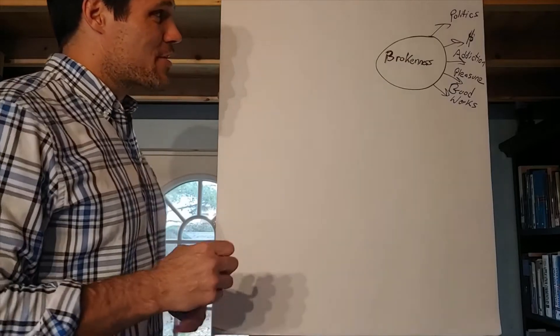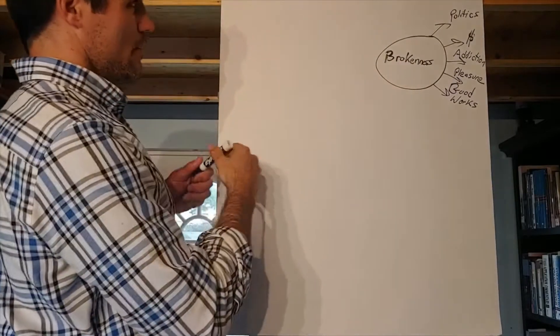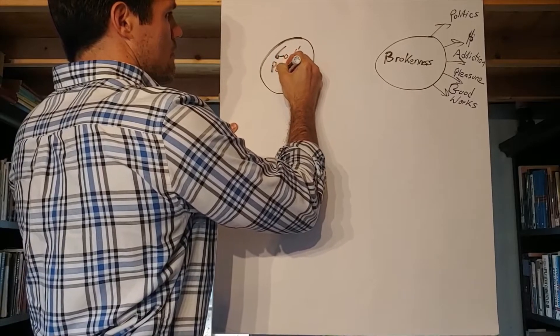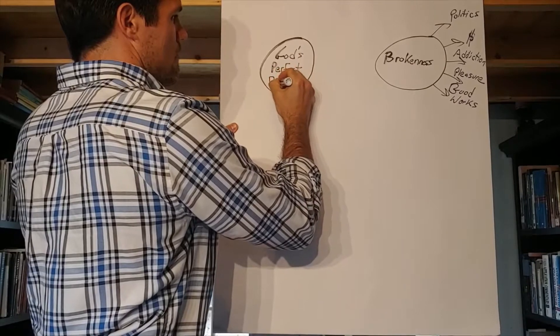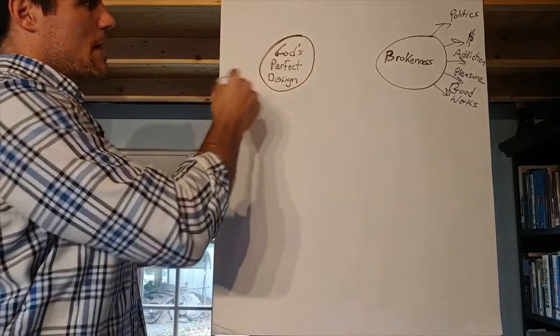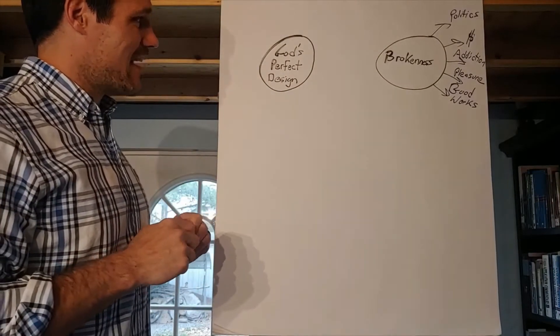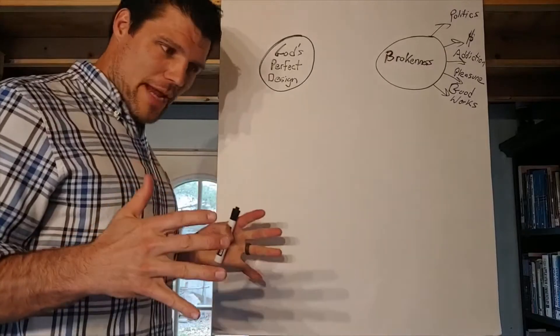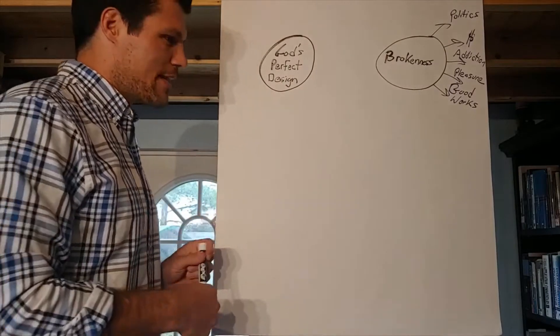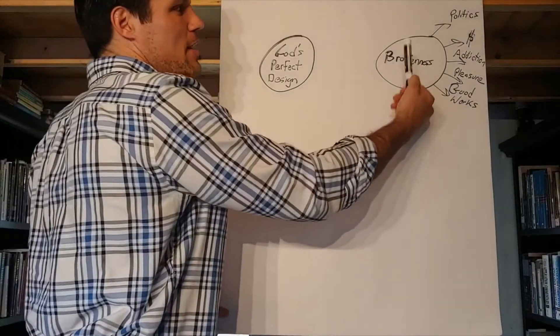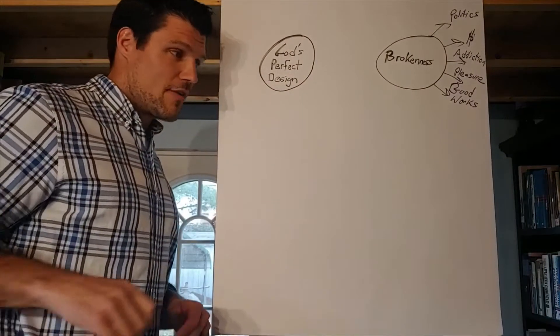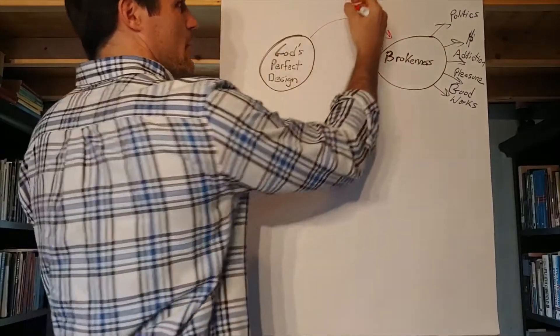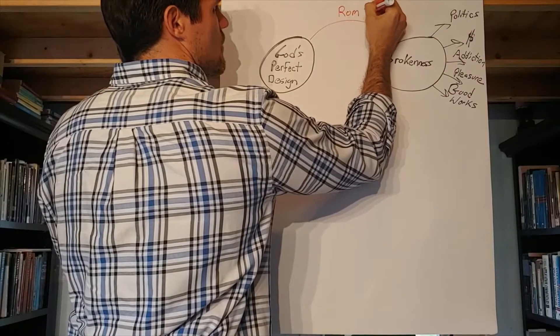Now the Bible says that God never created the world in this state. So I'm labeling this second circle called God's perfect design. Genesis chapter 1 verse 31 says that in the beginning, everything that God made, he said was good. So something happened between God's original creation and the world that we know today.